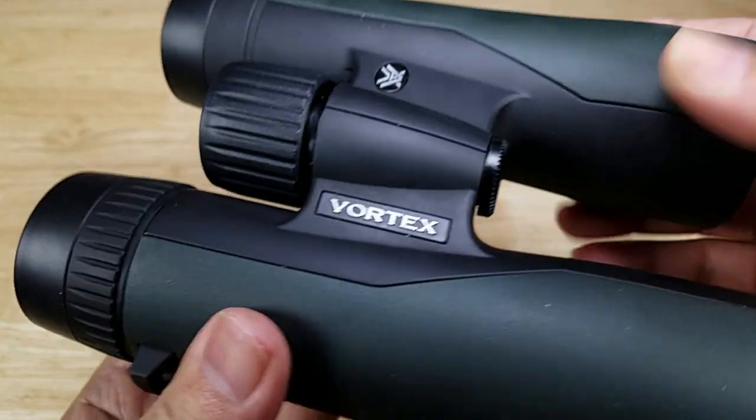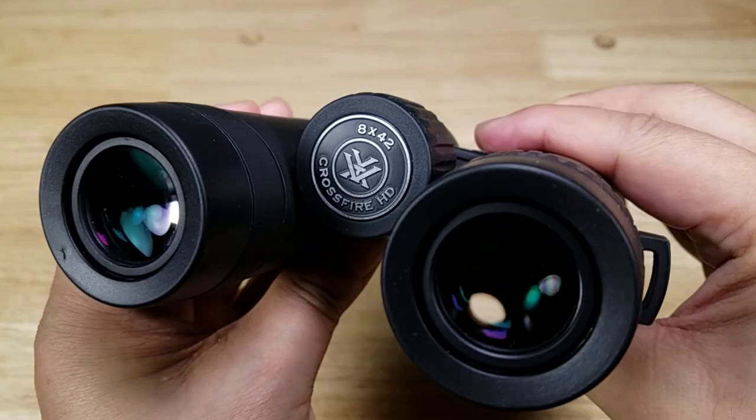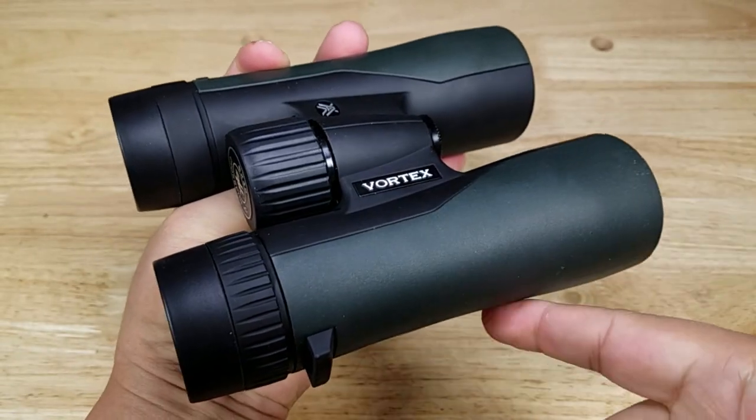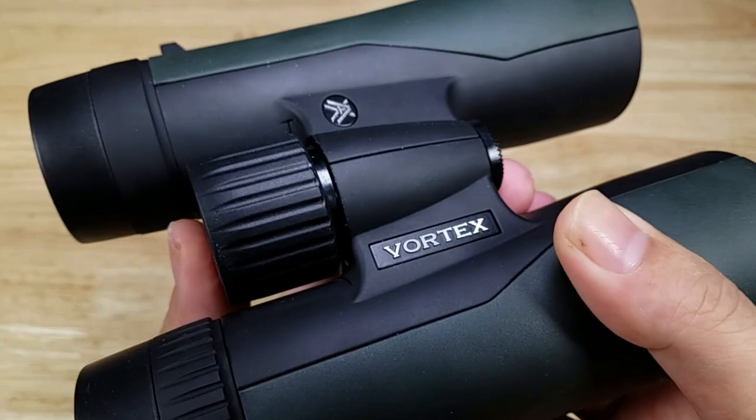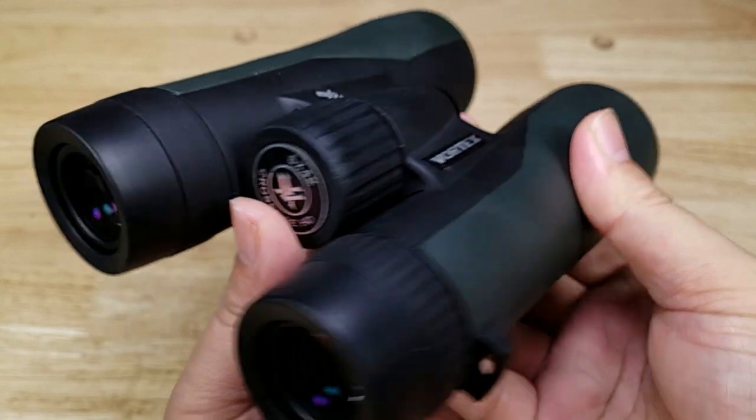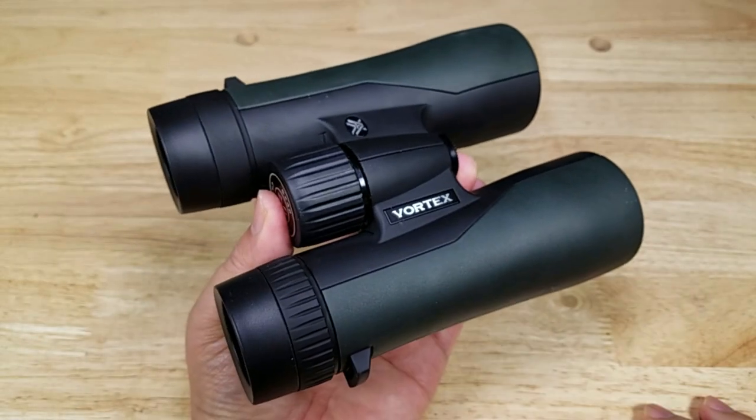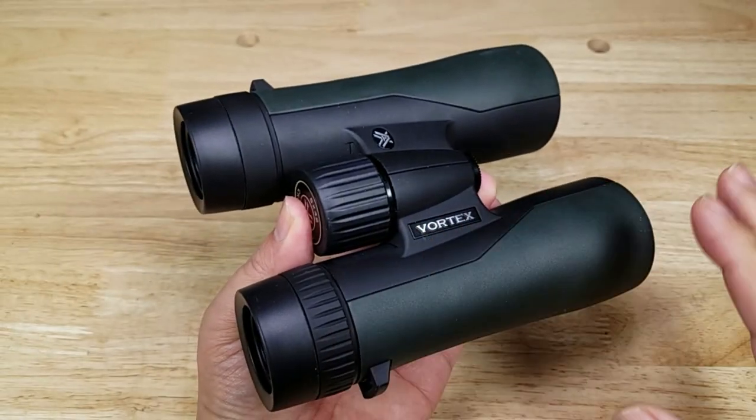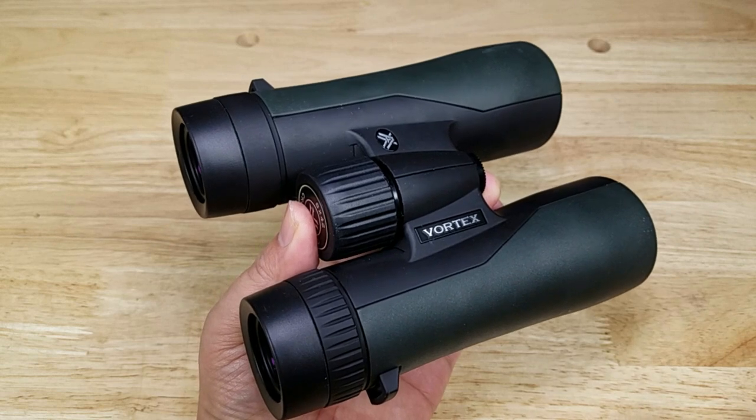If at the end of the video you want to purchase a Vortex Crossfire pair of binoculars, make sure you check out the link in the description below. For this demo we are using the Vortex Crossfire binoculars. This is an excellent entry-level pair of binoculars. Even at this range you're still going to pick up Vortex's unlimited lifetime warranty, fully transferable, no proof of purchase necessary.